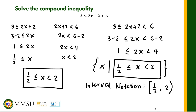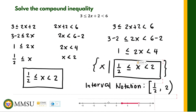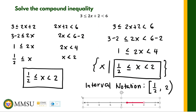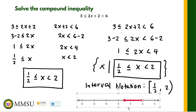To draw this on the number line, we place a closed circle at one half and an open circle at 2, then draw a line connecting the two circles. The graph goes from one half to the positive direction up to 2. That is how we solve a compound inequality. We will see you in the next video.